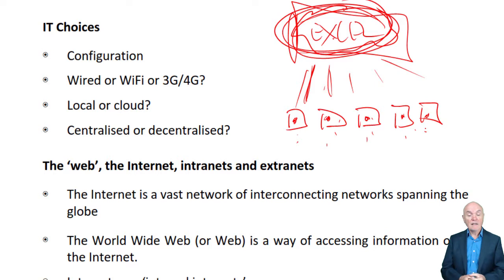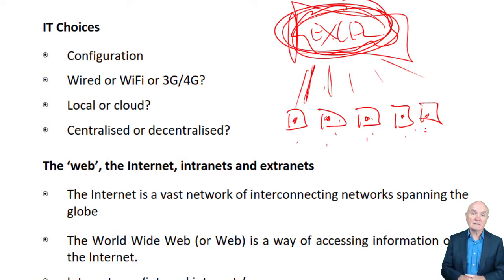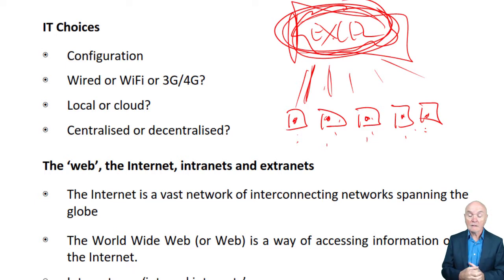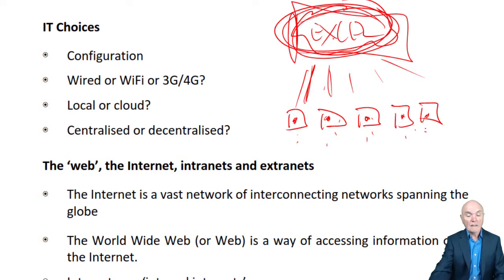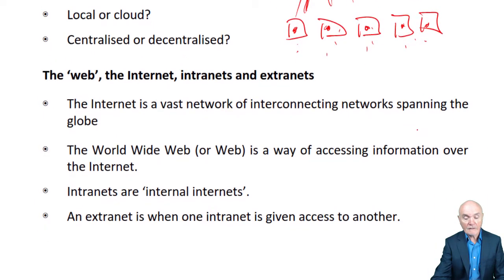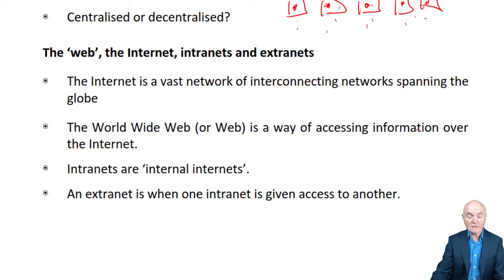Centralised versus decentralised. If something is decentralised, it spreads the risk, but it also spreads the data — and maybe where it could be hacked. If something is centralised, maybe all your eggs are in one basket: if that machine goes, then nobody can work at all. So there are quite a few IT decisions to be made.